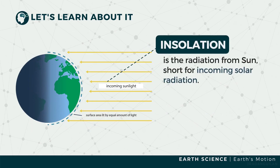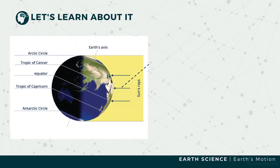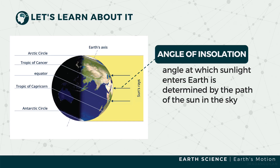Since the Earth rotates, different parts of its surface experience different heights of the Sun at a single moment. The longer the Sun is present in the sky, the greater the amount of radiation received by the Earth's surface. This radiation is referred to as insolation, short for incoming solar radiation. The angle at which sunlight enters the Earth is determined by the path of the Sun in the sky — this is referred to as the angle of insolation. If the angle of insolation is close to 90 degrees, Earth's surface receives the greatest intensity of insolation. This is why it's hotter at noontime and cooler during dusk or dawn.